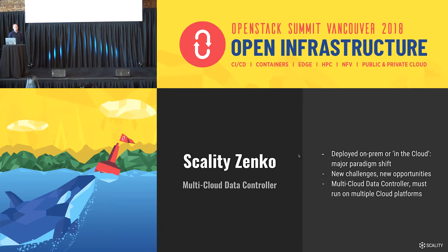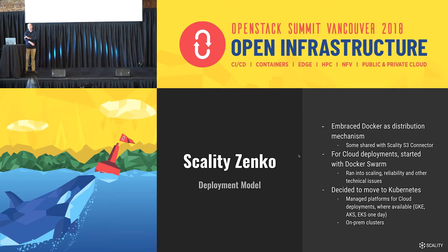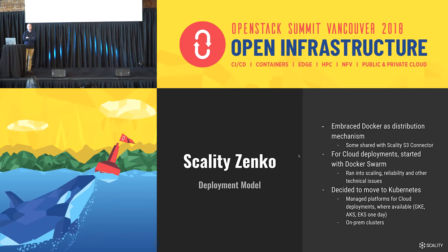Because it's a multi-cloud data controller, the solution itself must be able to run in different cloud environments. Similar to the S3 connector, Zenko has embraced Docker as a distribution mechanism — it even shares many containers with the S3 connector. For cloud deployments, we started with Docker Swarm, but sadly ran into scaling and reliability issues. So a couple of months ago, we decided to move to Kubernetes to leverage managed platforms like Google Kubernetes Engine, Azure Kubernetes Service, and potentially the Amazon offering.